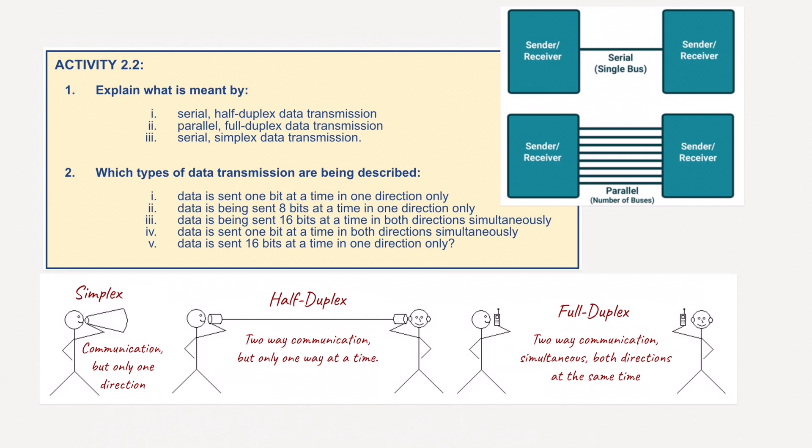For the second one, parallel full-duplex transmission, well, we're using multiple wires because it's parallel, and we're using full-duplex. So basically, we're using multiple wires in both directions, and the data can flow in both directions at the same time.